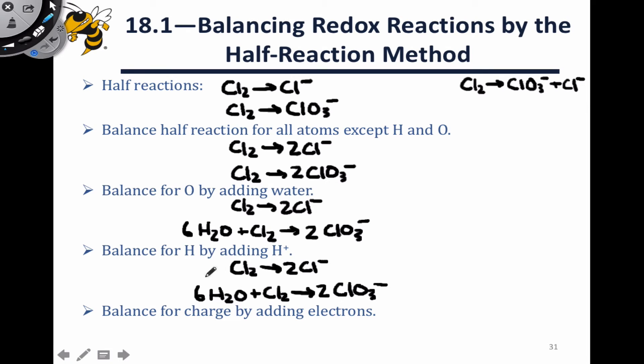We had 12 protons total on the reactants side, that is 12 hydrogens total within H2Os on the reactant side, and so we need to add 12 H+ on the product side to account for that. And now we're fully balanced with the exception of electrons.